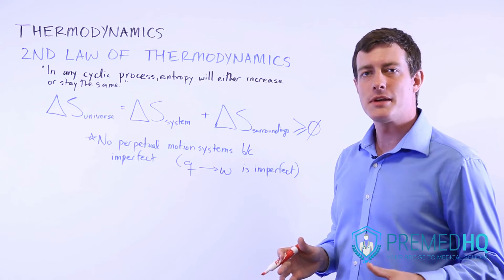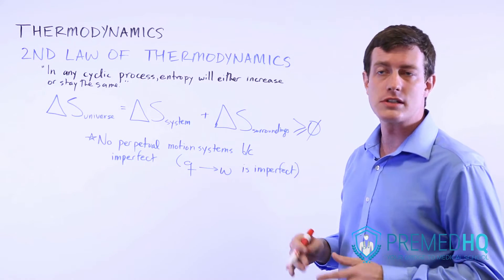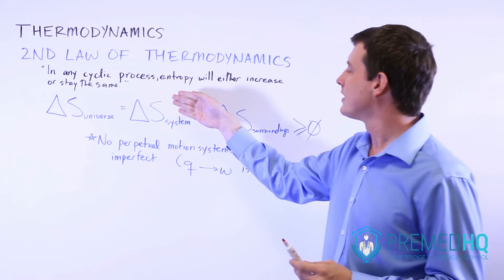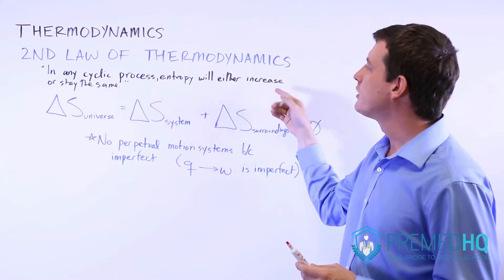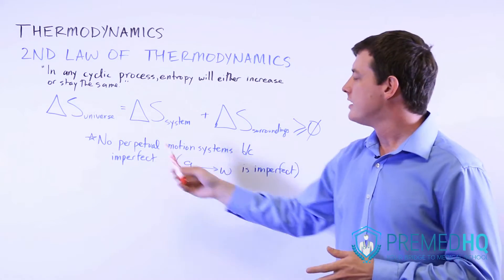The second law of thermodynamics deals with the entropy or disorder of the universe, and it may be stated this way: in any cyclic process, entropy will either increase or stay the same. You may also see it written as a mathematical relationship.